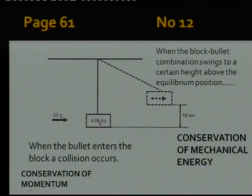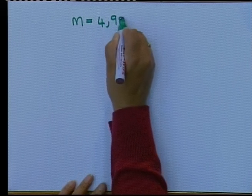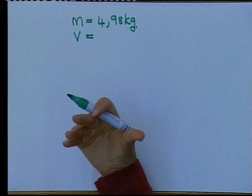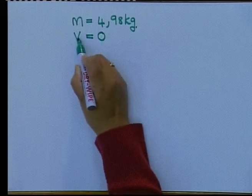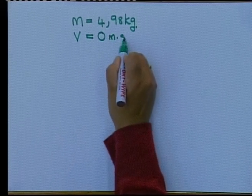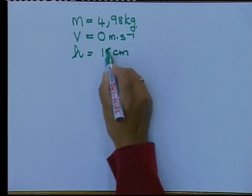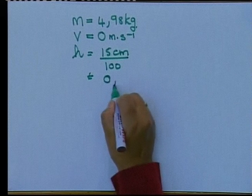We need to calculate the velocity when the bullet and block start to move. The information we have at the top: the mass of the block is 4.98 kilograms. At the highest point, the block and bullet come to a stop, so the velocity is 0 meters per second. We also have the height above the ground, which is 15 centimeters — converting to meters by dividing by 100 gives 0.15 meters.